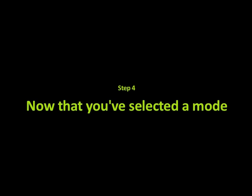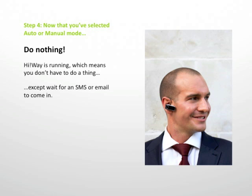Step 4: Now that you've selected Auto or Manual Mode, do nothing. Highway is running, which means you don't have to do a thing except wait for an SMS or email to come in.